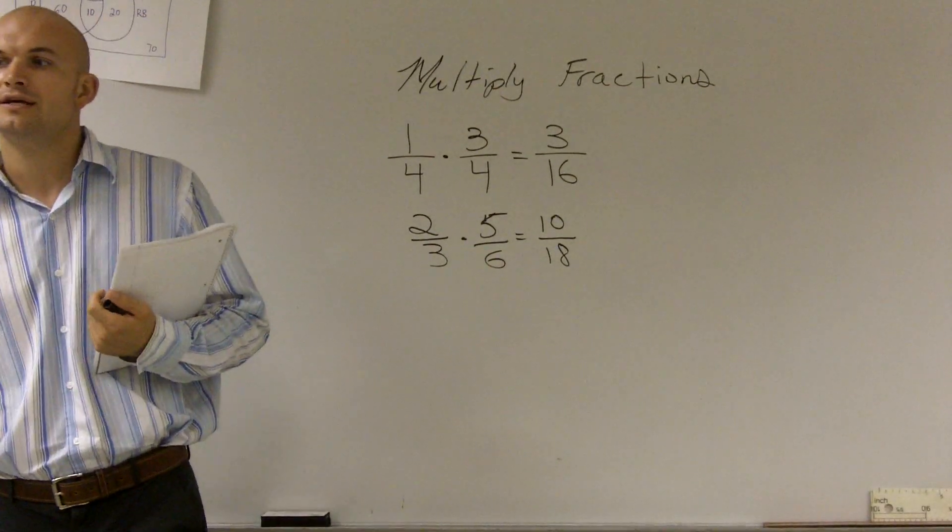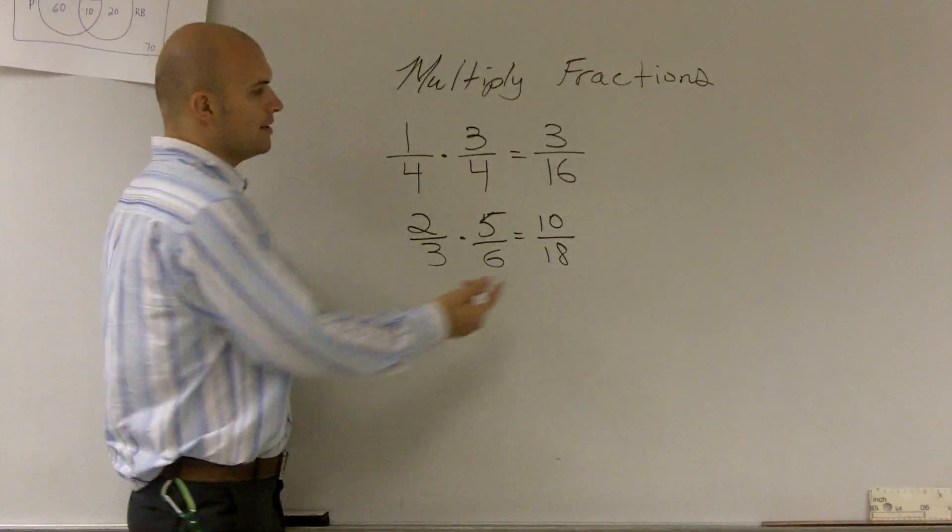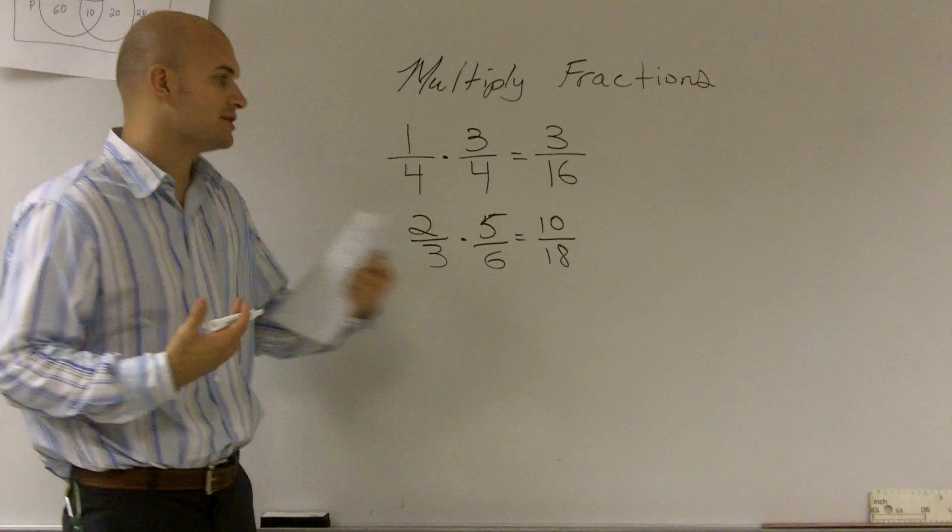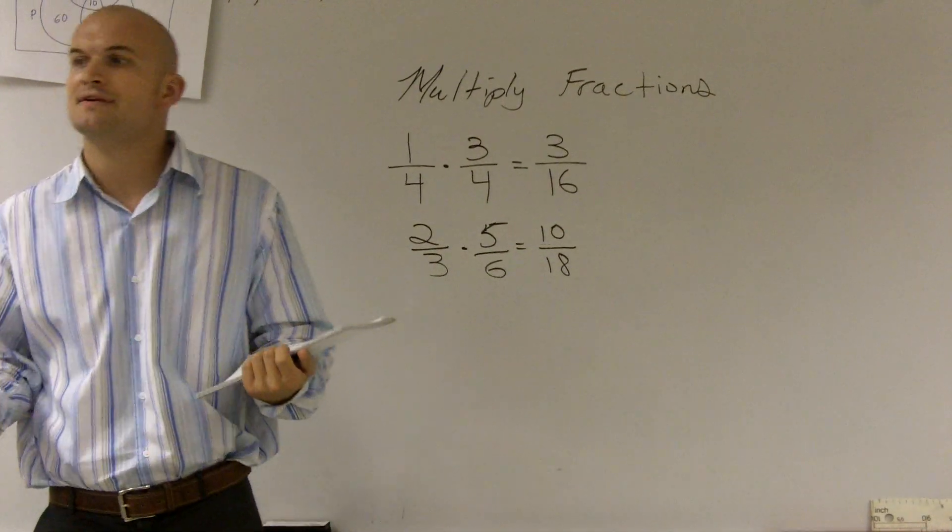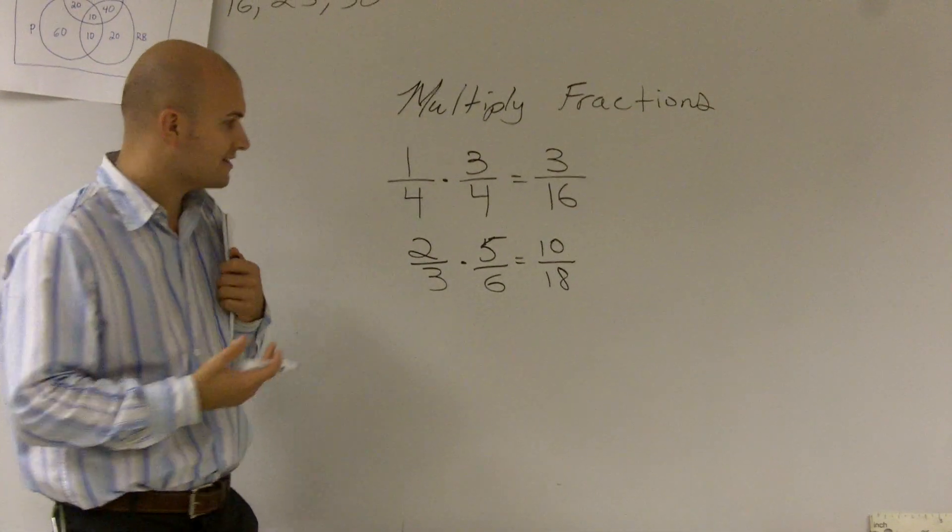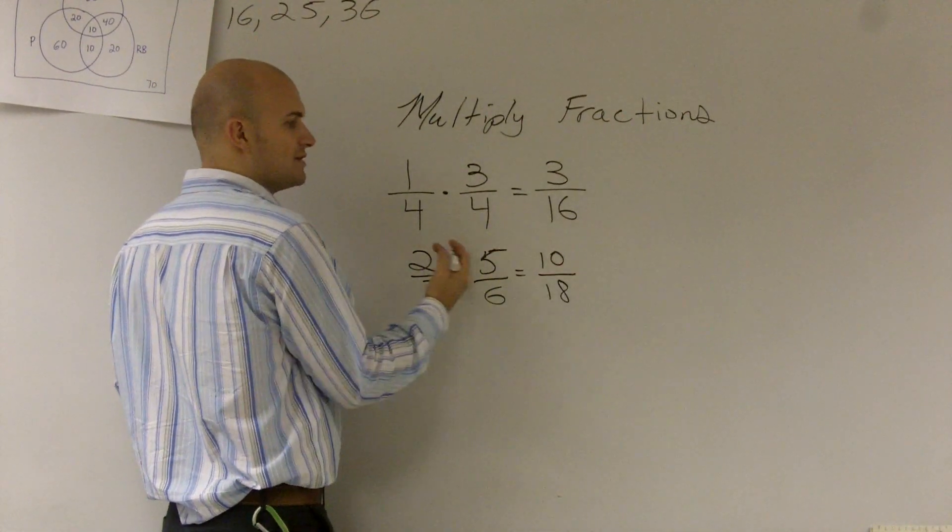What I mean by reducing our fraction is you want to pull out your common denominators between the two numbers. So if you look at 10 and 18, I say, all right, what numbers do they have in common? Or what is the largest number that they have in common? And you guys can see that 2 is your largest number, so I can actually take out a 2.